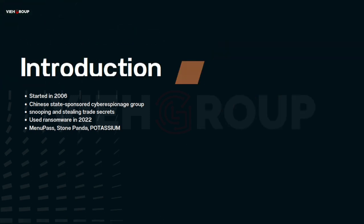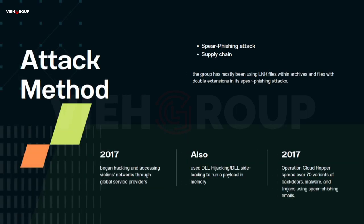APT10 has been using both traditional and modern attack methods. In its initial phase, the group used spearphishing attacks. Since 2009, the group has mostly used LNK files within archives and files with double extensions in spearphishing attacks. In some cases, it used identically named decoy documents and malicious launchers inside the same archives. They are also now using supply chain attacks as a modern technique.